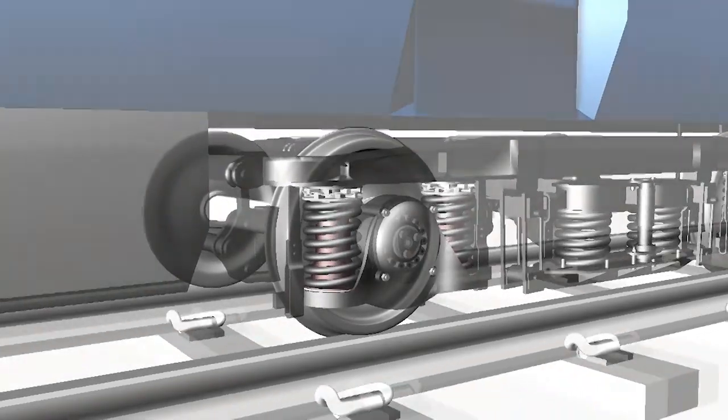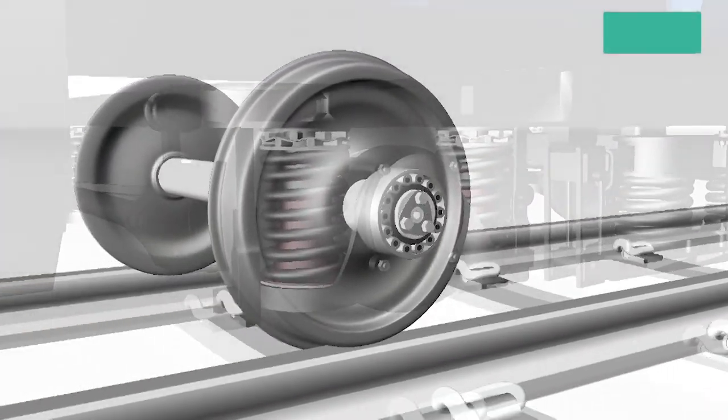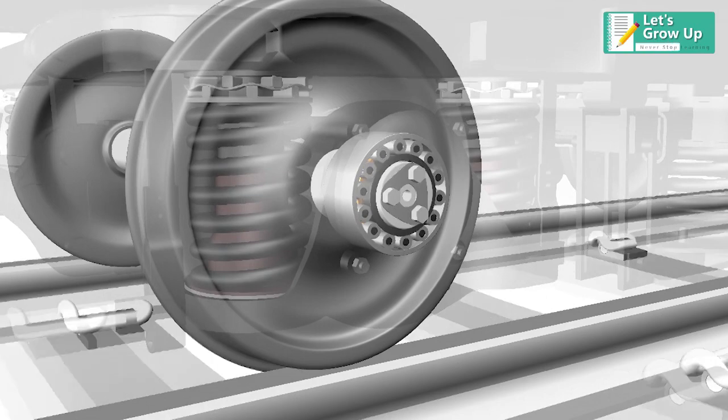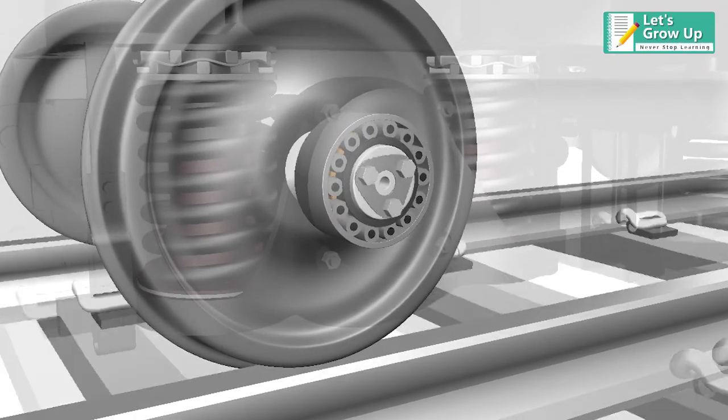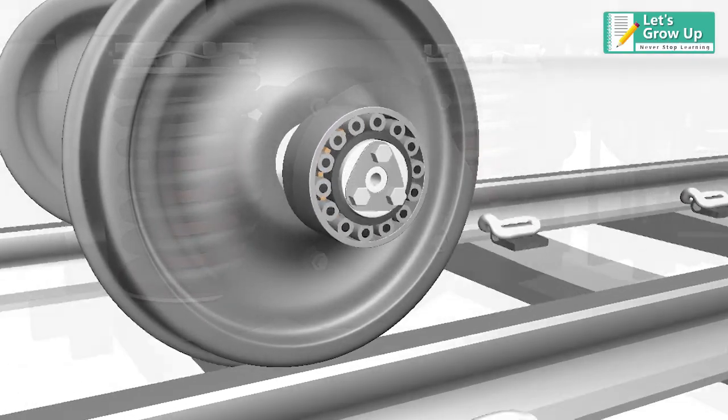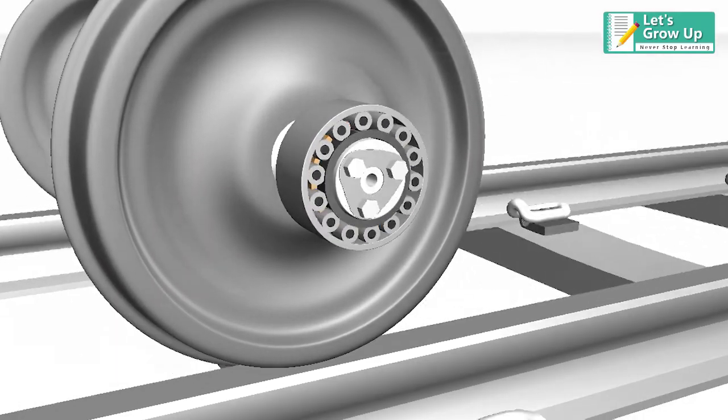Bearing plays a vital role between two rotary moving parts. Bearing works as an anti-frictional element and reduces frictional losses. If you want to learn more about spherical roller bearing, please check out our next video.